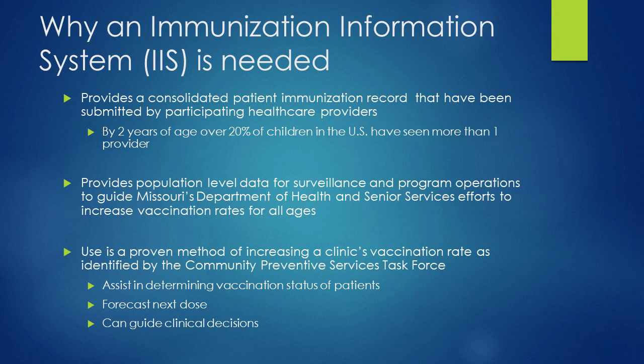Why is an immunization information system, or IIS, needed? CDC did a lot of research and noted that by two years of age, most children have seen multiple providers. This can lead to children's shot records being difficult to locate, and children receiving multiple immunizations — sometimes several of the same type. We've had kids that have gotten nine or ten DTaPs, and there's really no need.